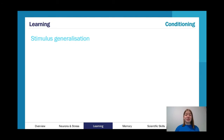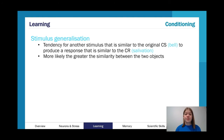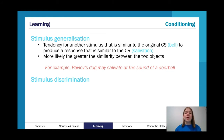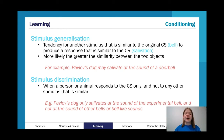When looking at conditioning, we also have stimulus generalization, where a stimulus similar to the conditioned stimulus produces a response similar to the conditioned response. For example, Pavlov's dog salivating at the sound of a doorbell instead of a normal bell. We also have stimulus discrimination, where you only get the response to the conditioned stimulus — for example, Pavlov's dog salivating to the handheld bell but not to other bells or bell-like sounds.